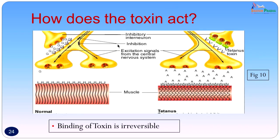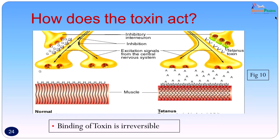The mechanism of action of this toxin is well explained by this picture. In a normal muscle, excitatory signals from the central nervous system cause the muscle to contract, while inhibitory signals from inhibitory interneurons — which release glycine — prevent further release of acetylcholine so the muscle can relax. In tetanus, the excitatory signals remain the same; however, the tetanus toxin binds on the motor nerve end plate and does not let acetylcholine get released from the inhibitory interneurons. This binding is irreversible and the muscle stays in a state of contraction.